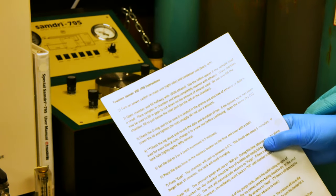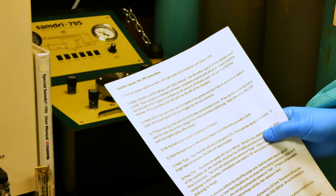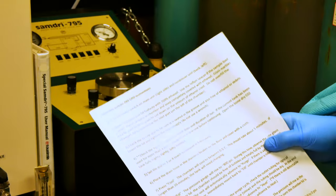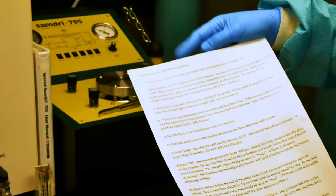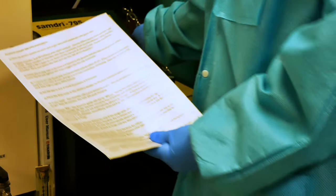Instructions for using the critical point drying to CMOS machine. We will start with turning the power switch on the main unit on the right side.